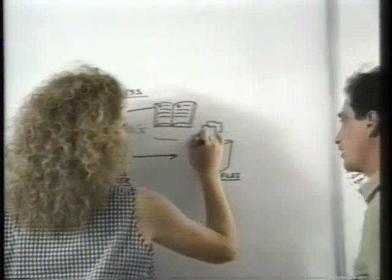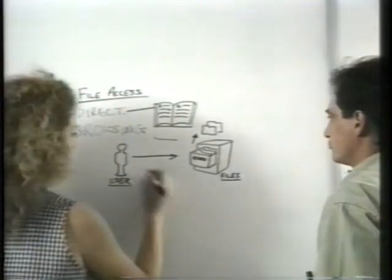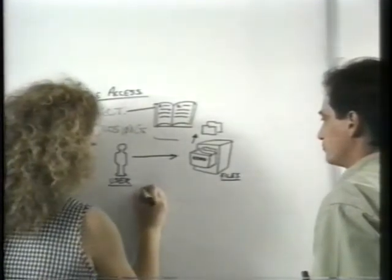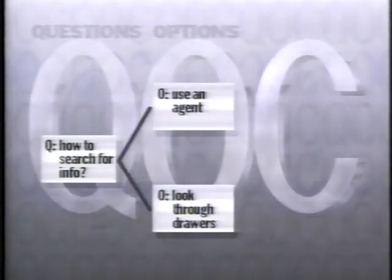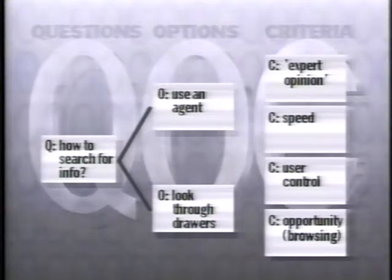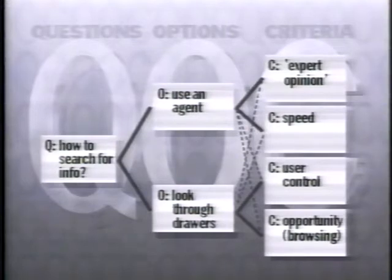As a design idea is being developed, much of the reasoning is implicit in the designers' minds. To represent design reasoning explicitly, we use a semi-formal notation called QOC, which encourages designers to organize a set of design considerations into questions, which identify design issues; options, which provide possible design solutions; and criteria for assessing and comparing the options. Broken lines indicate that the option is negatively assessed against a criterion, while solid lines show which criteria are supported by the option.